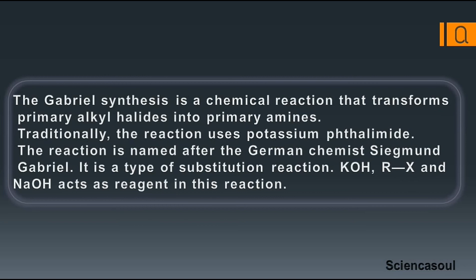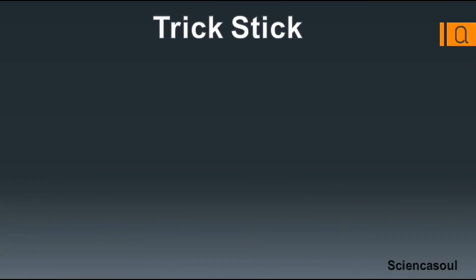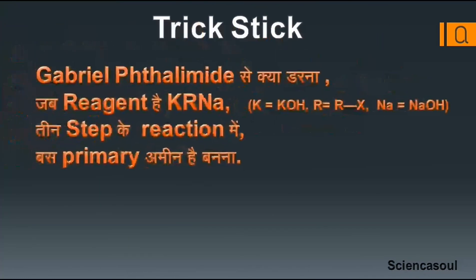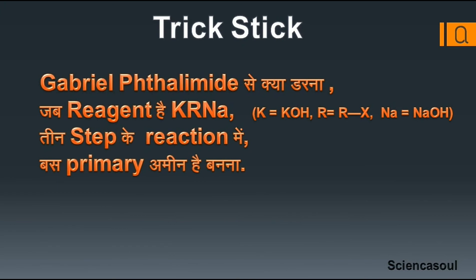This reaction is named after Siegmund Gabriel. It is a type of substitution reaction. In this reaction, KOH, RX, and NaOH play the role of reagents. Gabriel phthalimide — no need to fear when the reagent is there — in a three-step reaction, the primary amine is formed.